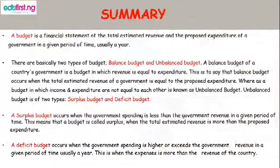Summary: a budget is a financial statement of the total estimated revenue and proposed expenditure of a government in a given period of time, usually a year. There are basically two types of budget: balanced budget and unbalanced budget. A balanced budget is one in which revenue is equal to expenditure, meaning the total estimated revenue of a government is equal to the proposed expenditure. A budget in which income and expenditure are not equal to each other is known as unbalanced budget.